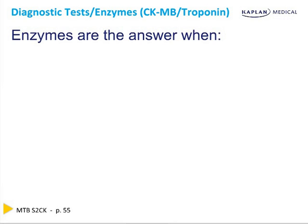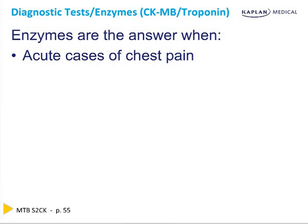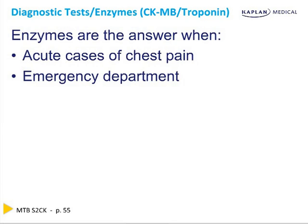Enzymes are the answer when a patient is acute — when they say 'I have chest pain now' and they're in the emergency department. It is not entirely clear whether it should be a CK-MB or a troponin. What we know is that they both rise after about four to six hours and go up at the same time. The CK-MB only lasts for one to two days, while troponin lasts for one to two weeks.